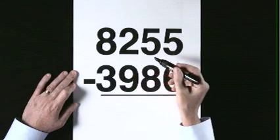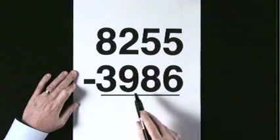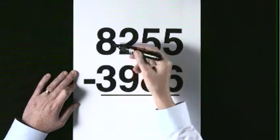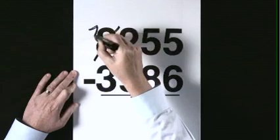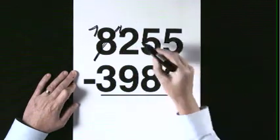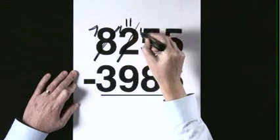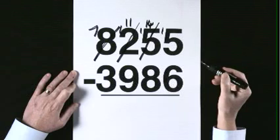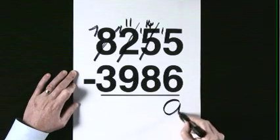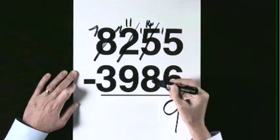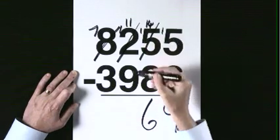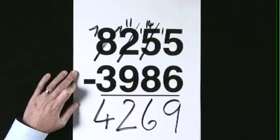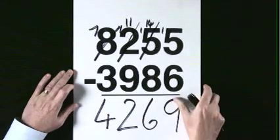8,255 subtract 3,986. We can't subtract, we need to exchange from the 8. 8 becomes 7, 12. 12 becomes 11, 15. 15 becomes 14. 15 take 6 is 9. 14 take 8 is 6. 11 take 9 is 2. 7 take 3 is 4. The answer is 4,269.